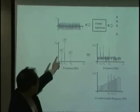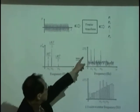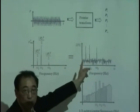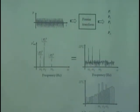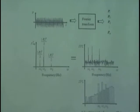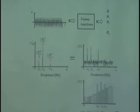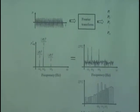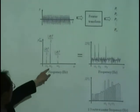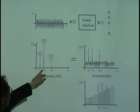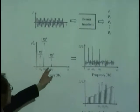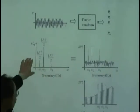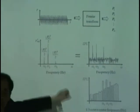That Fourier transform gives me the magnitude |P1|, |P2|, |P3|, where 1, 2, 3 stand for the frequencies omega_1, omega_2, omega_3. And then I can get the magnitude of the scale component at each frequency — what we usually call the spectrum.